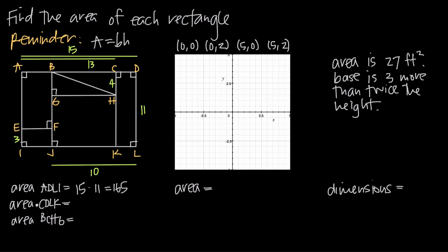For the area of rectangle CDLK — the rightmost interior rectangle — the height is again 11 since CDLK has the same height as the outermost rectangle. But I need to find the base. The width of the entire outermost rectangle, AD, is 15, and the distance from A to C is 13. So the length from C to D has to be the difference: 15 minus 13, which is 2. So the length of CD is 2, which I can use as my base.